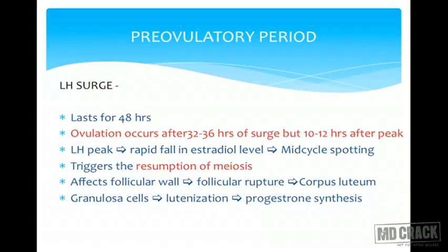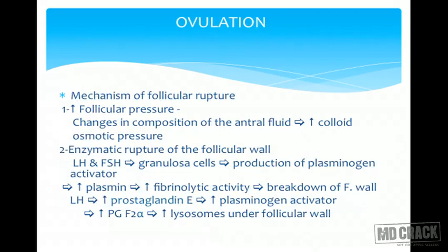LH affects the follicular wall causing follicle rupture, and there is formation of the corpus luteum as granulosa cells get luteinized and progesterone synthesis begins. The mechanism of follicle rupture involves increased follicular pressure, changes in antral fluid composition, increased colloid osmotic pressure, and enzymatic rupture of the follicular wall. LH and FSH act on granulosa cells to secrete plasminogen activator, increasing plasmin and fibrinolytic activity. The LH peak also releases prostaglandins and plasminogen activators causing micromusculature spasm, increased PGF2α, and lysosome activity under the follicular wall, causing wall breakdown and follicle release.